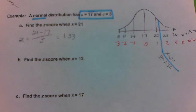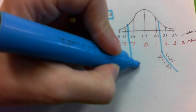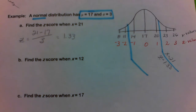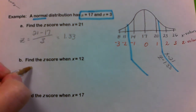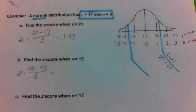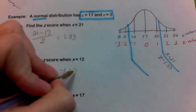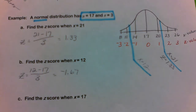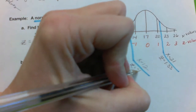Part B asks for the Z score when X = 12. On the number line, 12 falls to the left, so I expect a negative result of about negative one point something. Using the formula: Z = (12 − 17) ÷ 3 = −1.67. At the raw score of 12, the standardized value is negative 1.67.